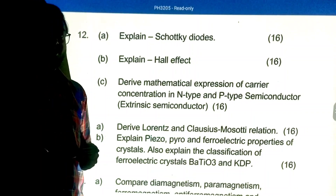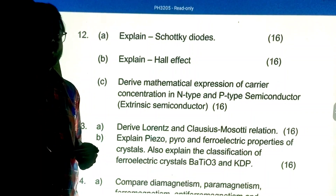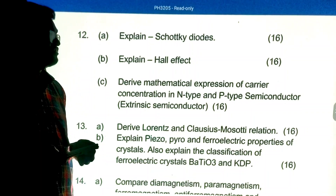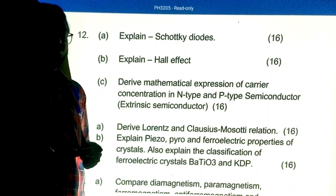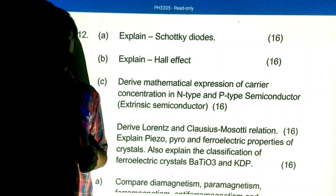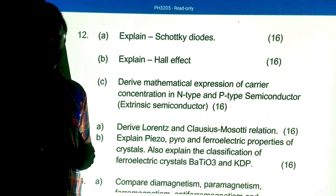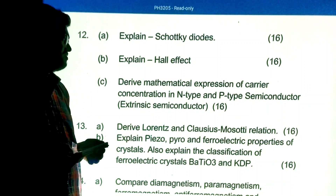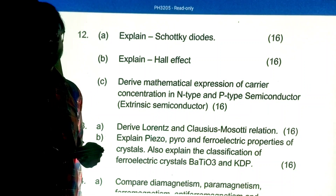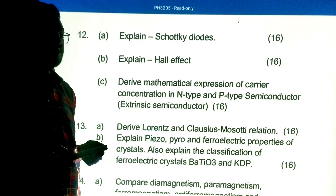Part B, Unit 2 important questions: Explain Schottky diodes. Explain the Hall effect. Derive the mathematical expression of carrier concentration for n-type and p-type semiconductors, that is extrinsic semiconductors.